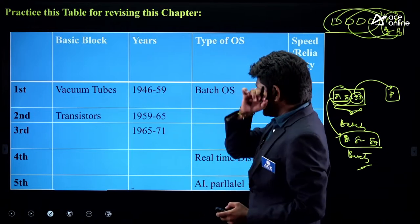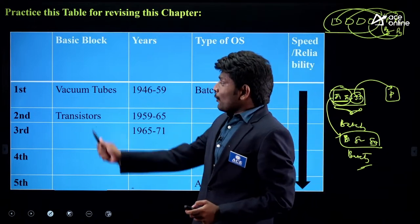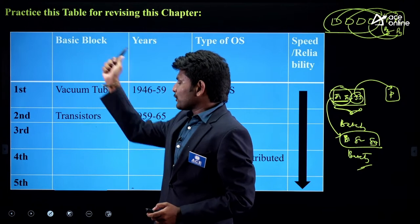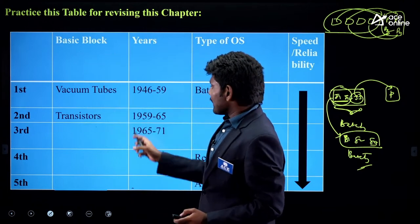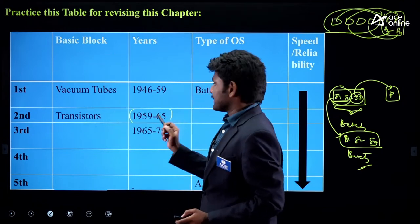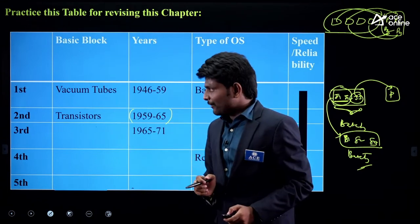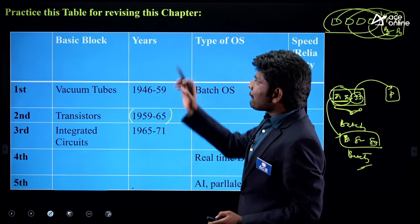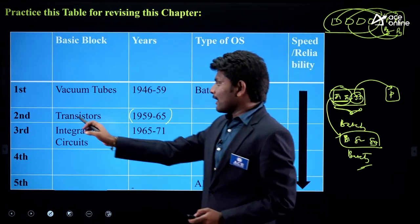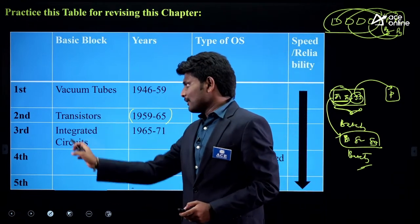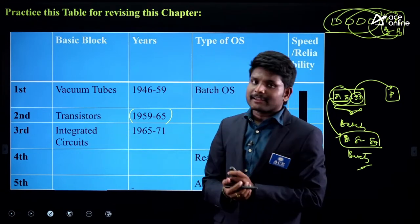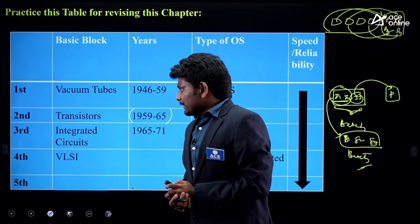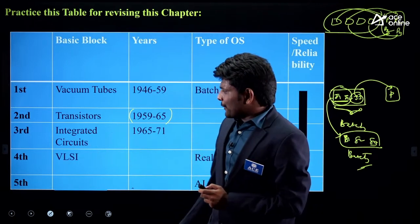Next question: 'When were the second generation computers active?' — 1959 to 1965. Then: 'What are the basic blocks used in third generation computers?' — Integrated circuits.